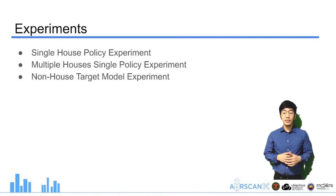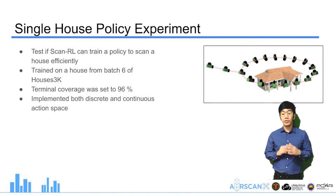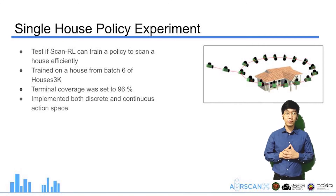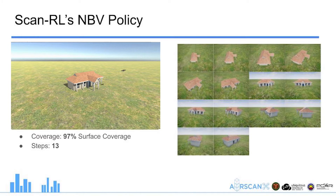We conducted three experiments to evaluate ScanRL: the single house policy experiment, the multiple houses single policy experiment, and the non-house target model experiment. The single house policy experiment tested ScanRL by training a policy to scan a house from batch 6 of Houses3K with a terminal coverage of 96%. The circular path baseline achieved 87% surface coverage within 17 steps. The NBV policy learned by ScanRL achieved 97% surface coverage with only 13 steps, because the agent learned to focus on self-occluded regions under the roof.